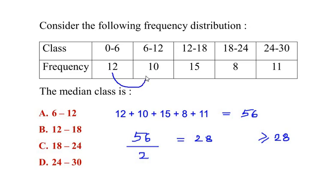Now 12 plus 10 gives us a total frequency of 22. Now this 22 is less than 28, so 6 to 12 and 0 to 6 is not our median class.